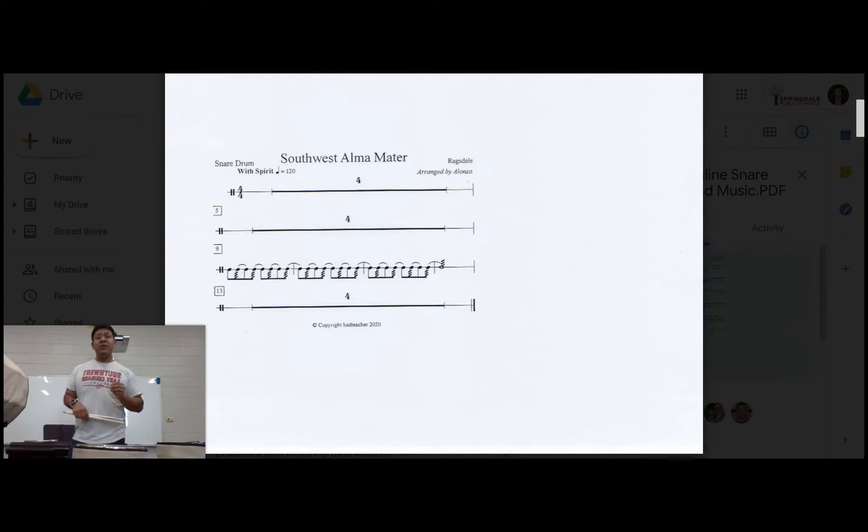So if you forgot what that number symbol is with the block, that just means that you're going to rest for that many measures. So at the very beginning, you're going to go 1, 2, 3, 4, 2, 2, 3, 4, 3, 2, 3, 4, 4, 2, 3, 4. Then you're at measure 5. Okay?